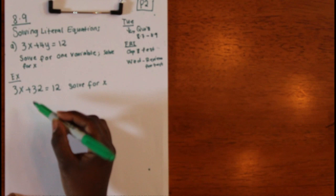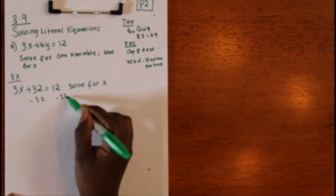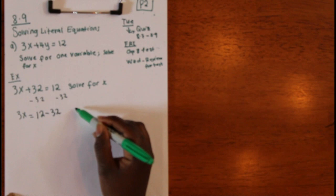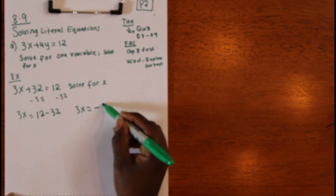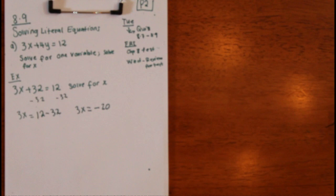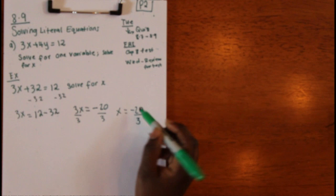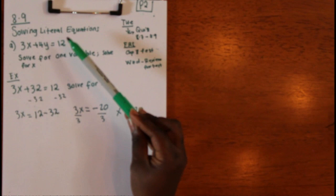To solve for X we subtract 32 on both sides, giving us 3x = 12 − 32, which equals −20. Then divide both sides by 3, so X equals −20 over 3. This is just a standard linear equation — we know how to solve this kind.